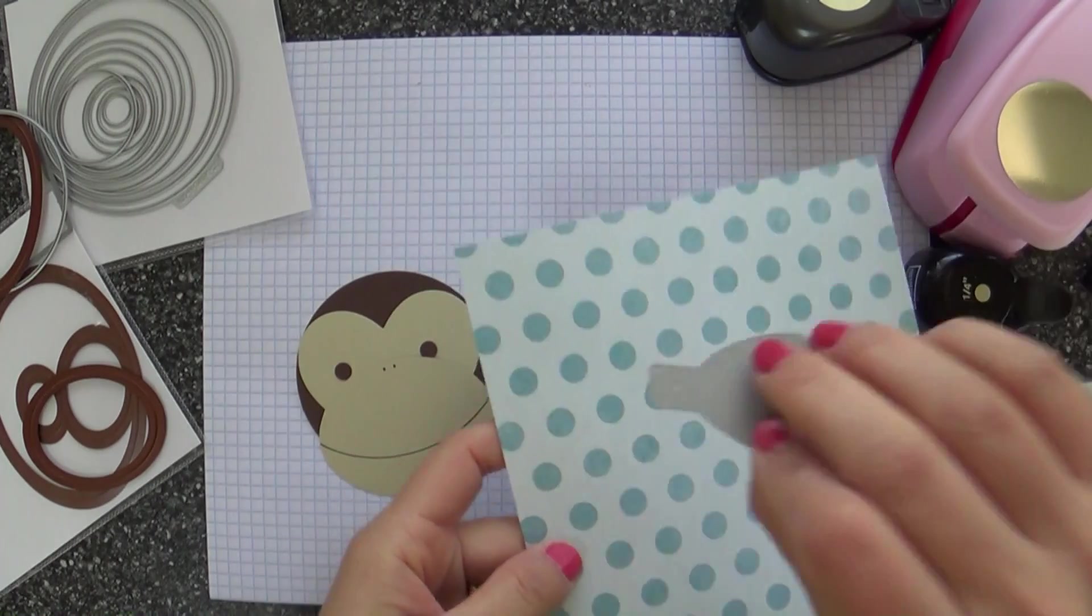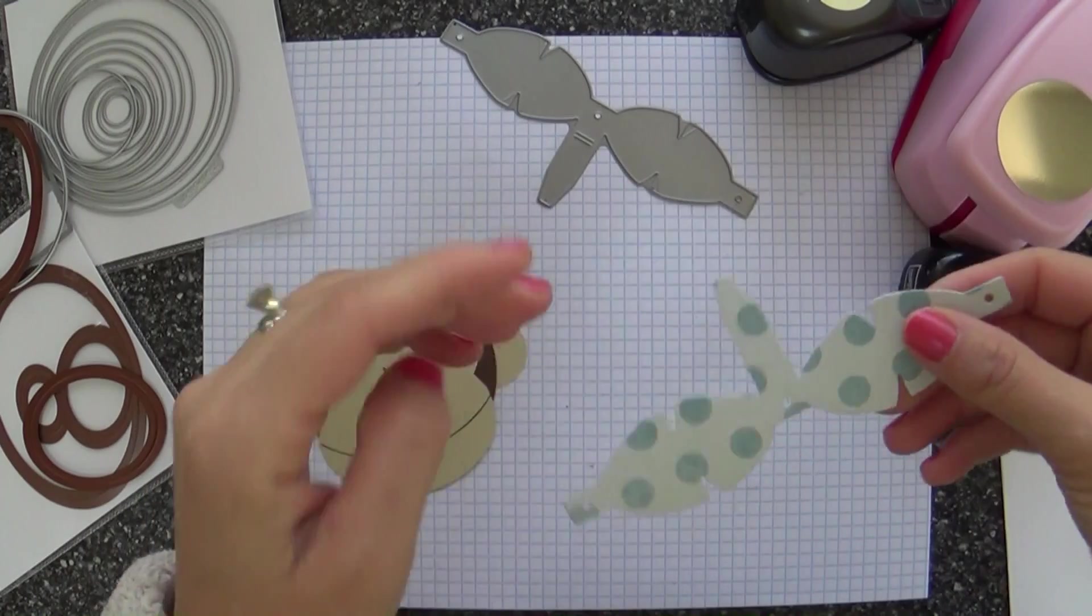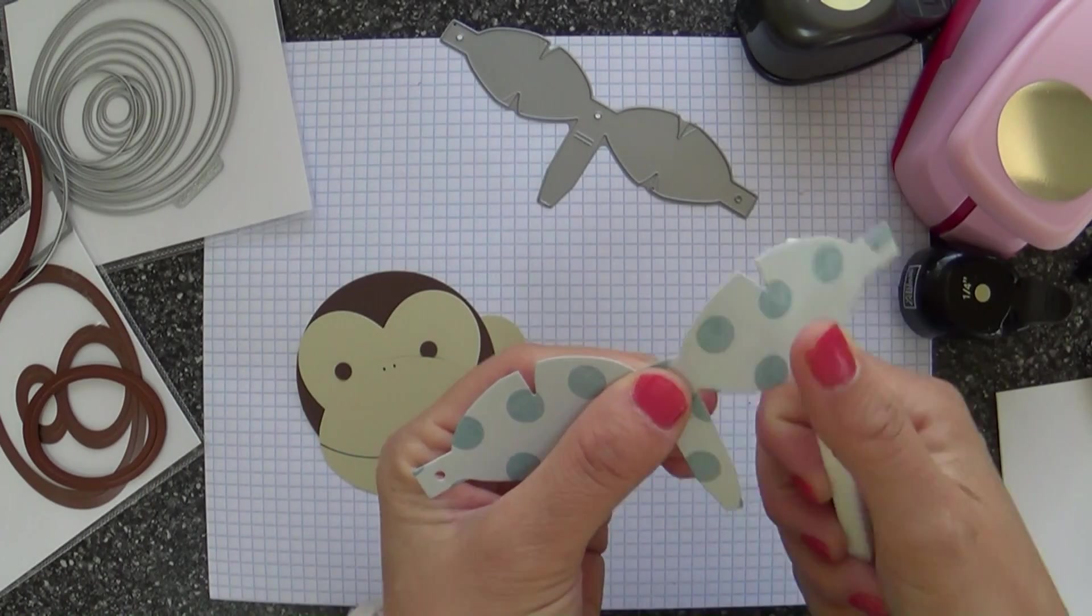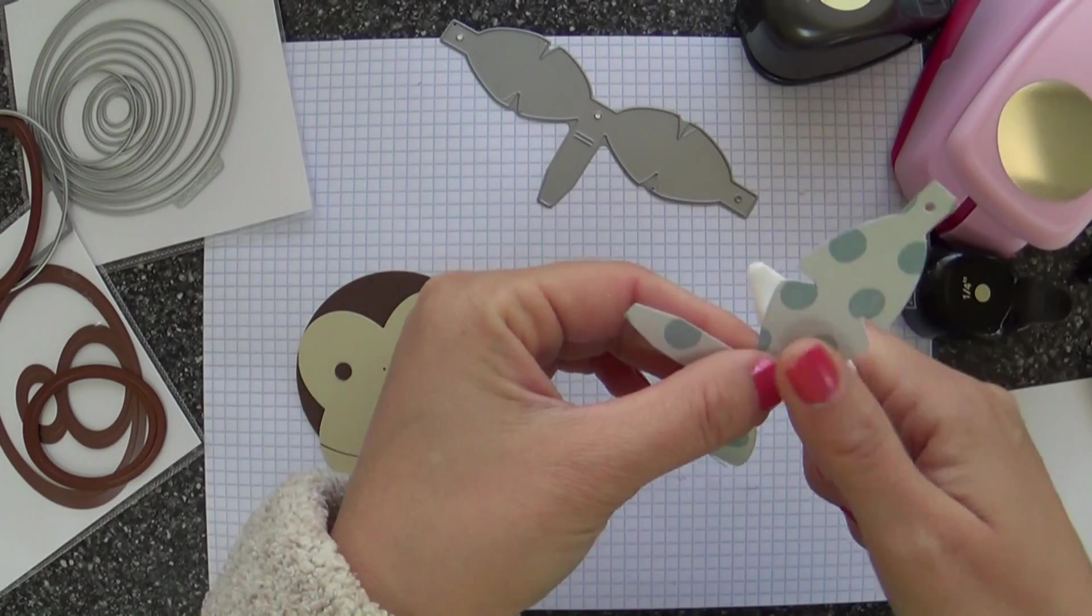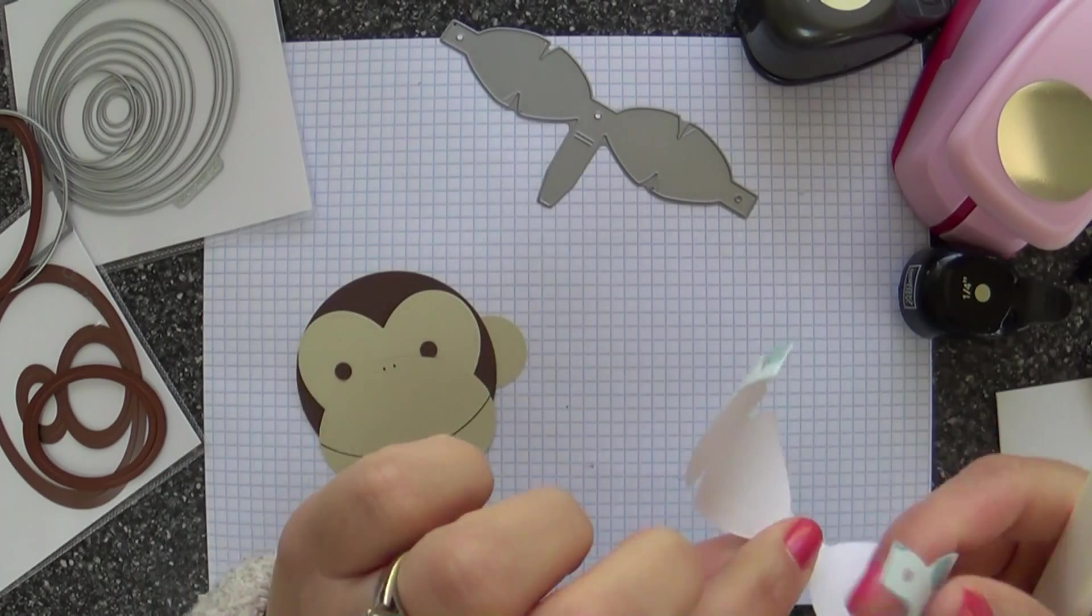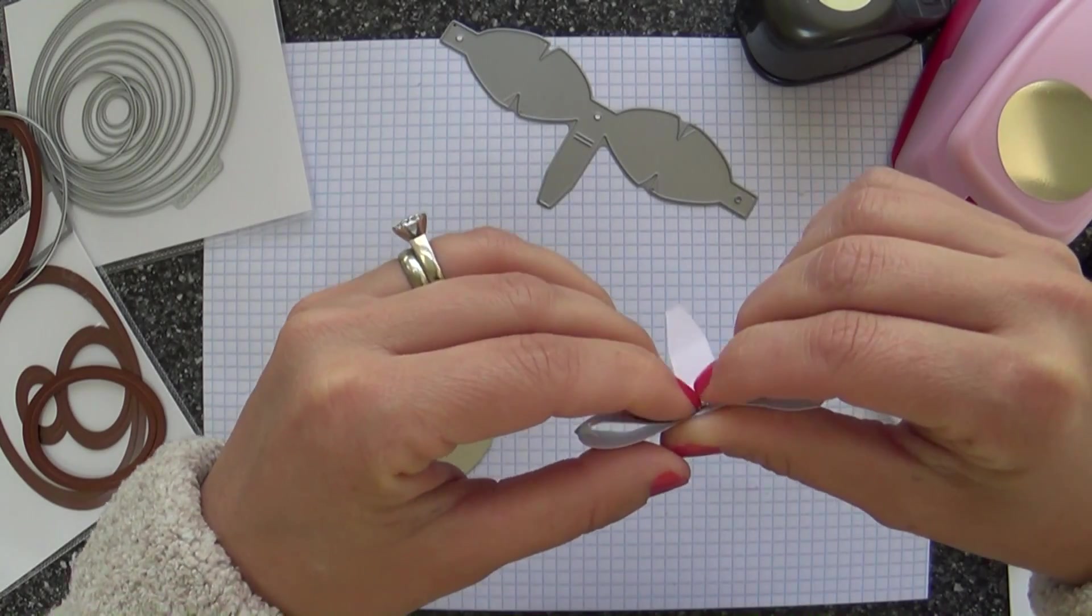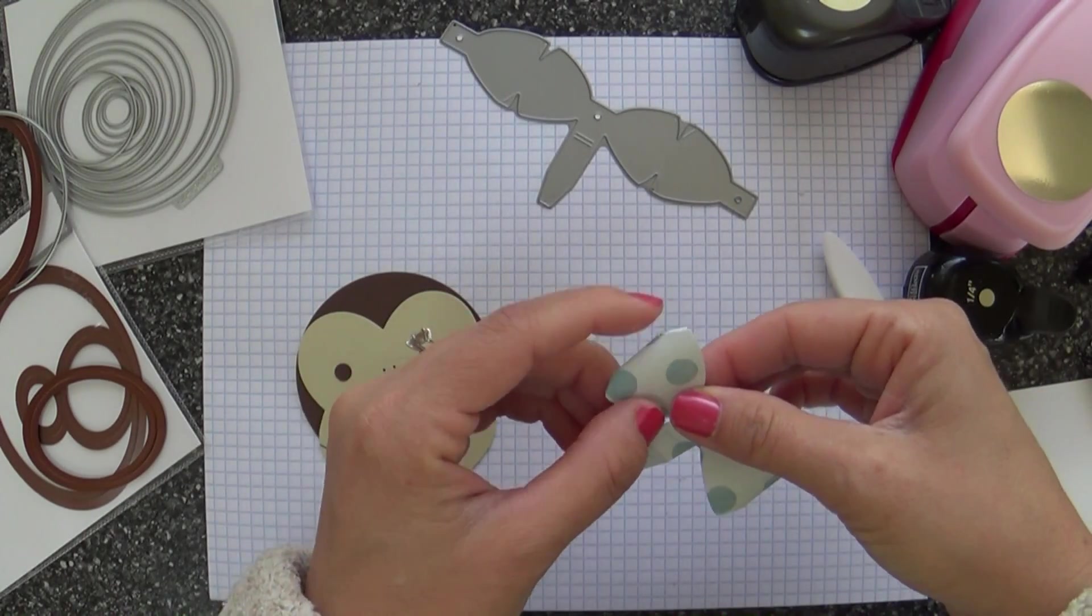Now I've got some pattern paper and the 3D bow die. I'm going to die cut that bow. This is some Dear Lizzie Daydreamer pattern paper. And when I do a bow, I like to take my bone folder and kind of run it along the backside and it starts to curl the paper. And I think it just gives a nice head start for your bow. It gives it a nice rounded bow. Instead of just folding that flat, I like to have a more rounded look.